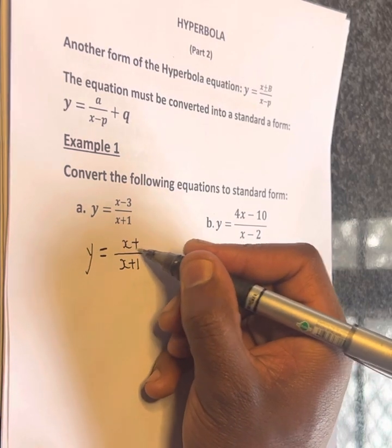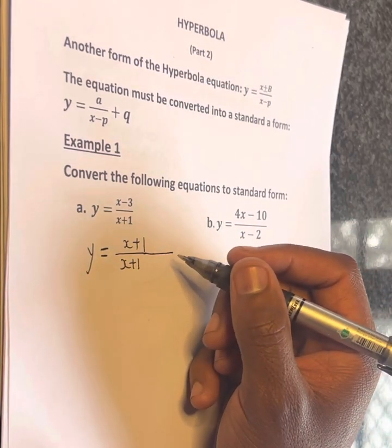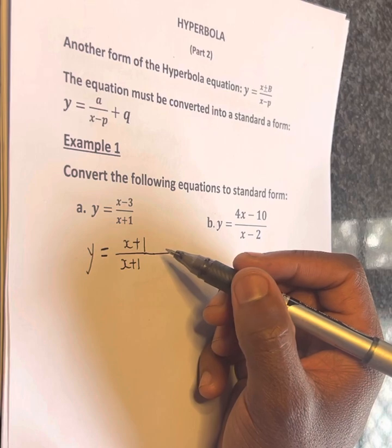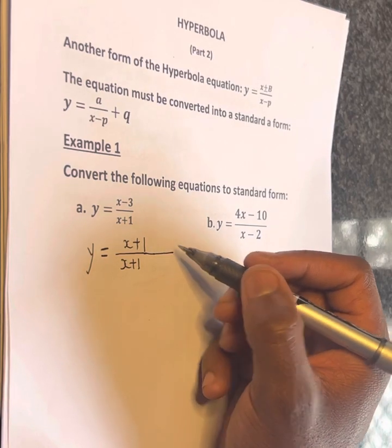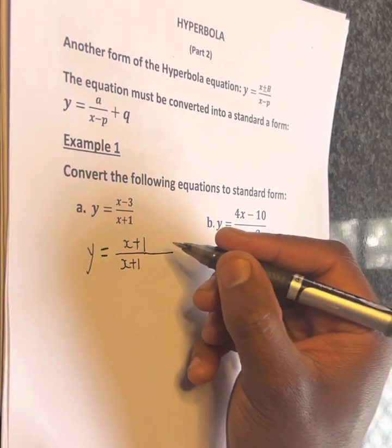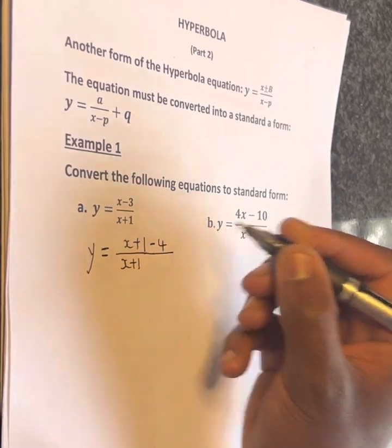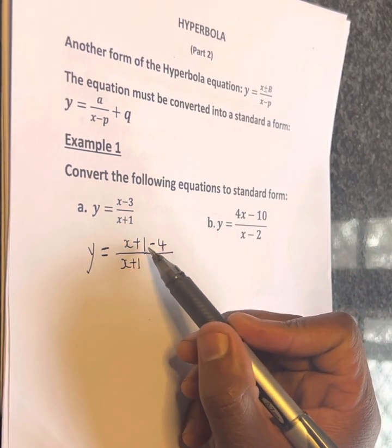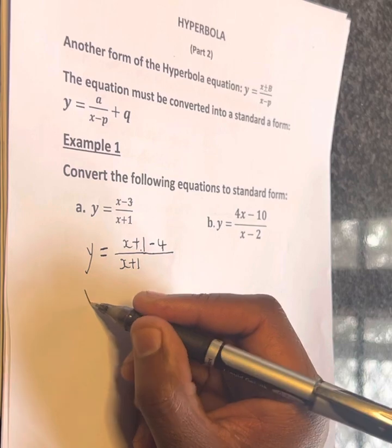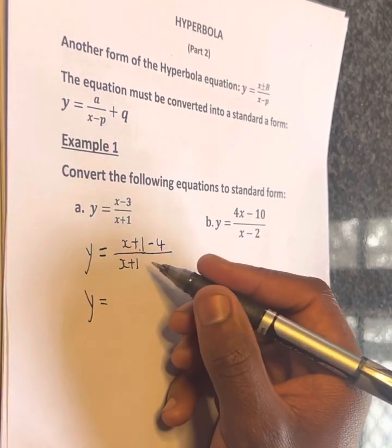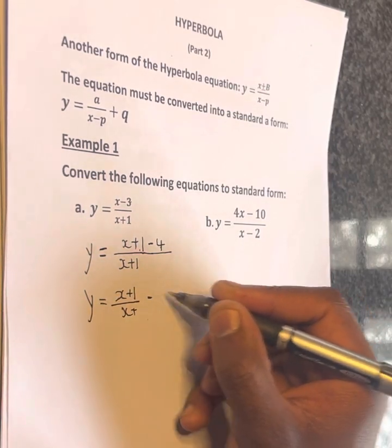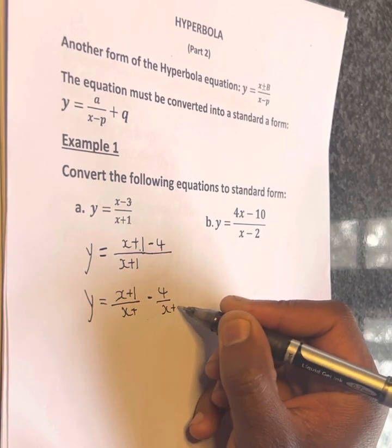We have x plus 1. So now we have x plus 1 over x plus 1 plus one minus four over x plus one.